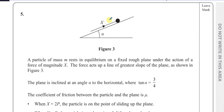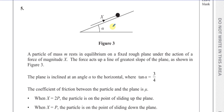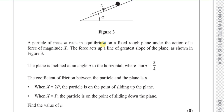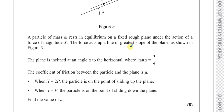So when X equals 2P, it's about to be pushed up the plane. But when X equals P, that force is just preventing it from sliding down the plane, which it would do due to gravity. We want to find the value of mu — this is a rough plane, so there is friction involved.